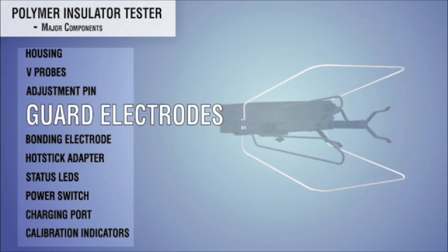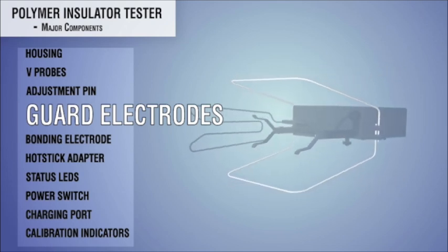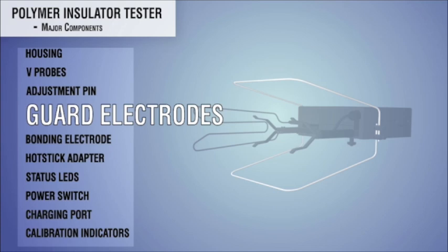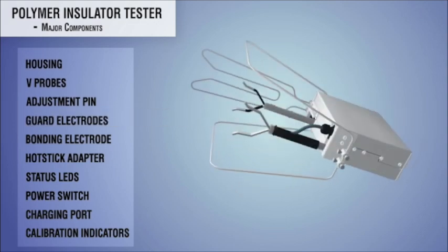Guard electrodes: Two guard electrodes shield the V-probes from the power frequency electric fields. The guard probes are made of spring steel so that they can bend. The guard probes are easily removed for replacement or storage, but must be installed during calibration and measurement.